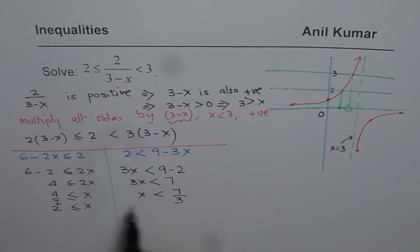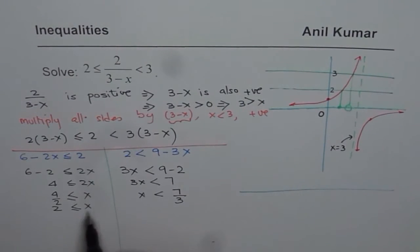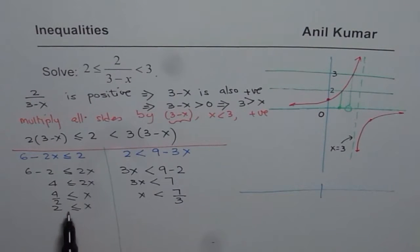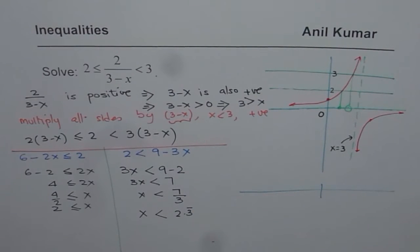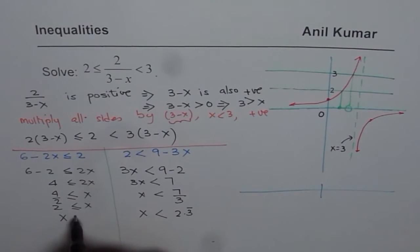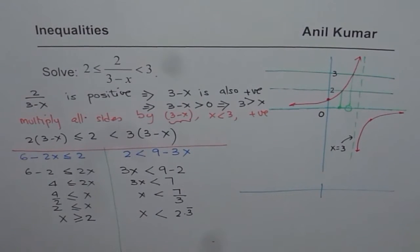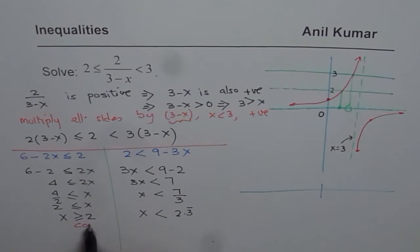On a number line we can show both solutions. The first solution is x ≥ 2 — including 2 and extending to the right. The second solution is x < 7/3 ≈ 2.33, extending to the left of 2.33. The overall solution is whatever is common to both intervals.